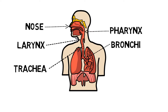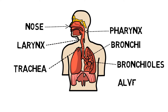The two bronchi will divide further into bronchioles, which subdivide further another 23 times. Surrounding the bronchioles are tiny air sacs called alveoli. There are approximately 600 million alveoli in each lung. It is here where the exchange of gases occurs.